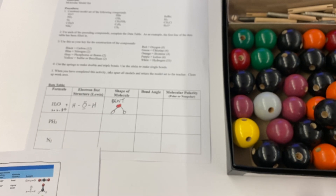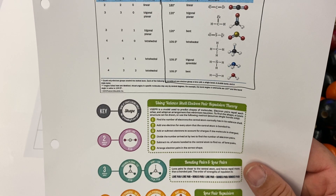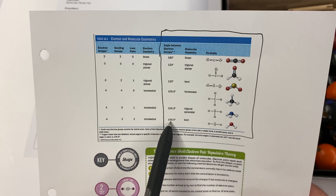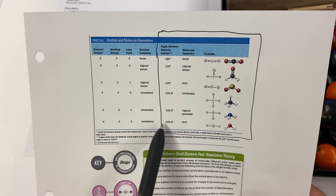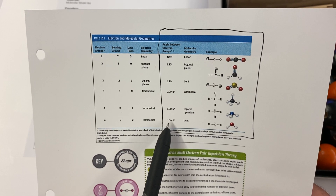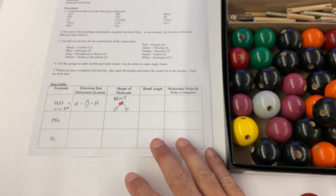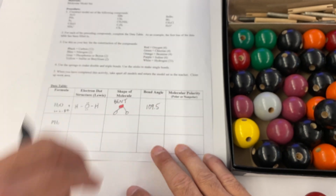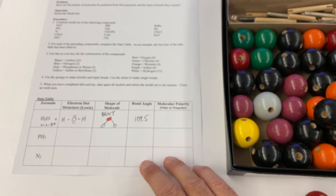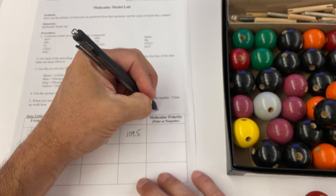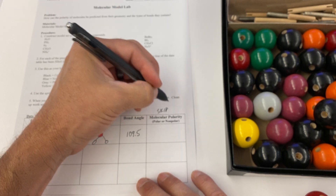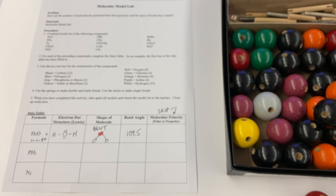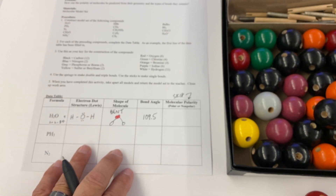Once you establish the shape, go back to your reference sheet and look at the bond angle linked to that shape. For water, which is bent, the bond angle is 109.5°. For molecular polarity, we're going to skip that last column for right now — you can do that later on.